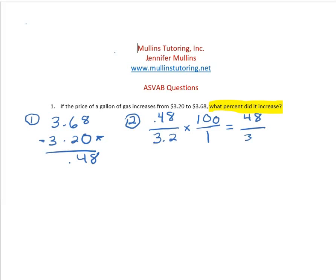Now we have to simplify this, and the way we would simplify this is to divide. So we're going to divide 48 by 3.2. Anytime you have a decimal as your divisor, you need to change it into a whole number. The way we do this is we move the decimal place over until we have a whole number.